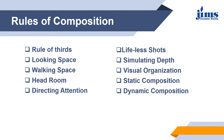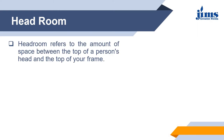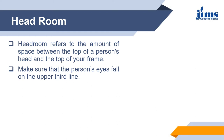Headroom refers to the amount of space between the top of a person's head and the top of your frame. Make sure that the person's eyes fall on the upper third line. Don't make a shot too close to the top so that the person's head is chopped off. Like in this image, the frame is not good because the head is chopped off — there should be a space between the person's head and the edge of the screen.